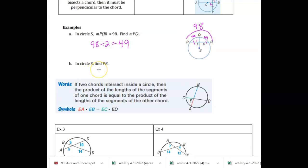All right, so in circle S, find PR. Well, if that's 6 and these are equal, then this is going to be 6. So P to R is the total length, which is going to be 12. All right.